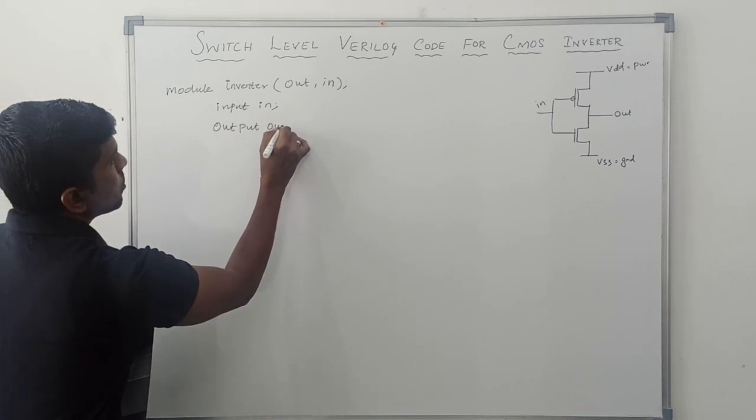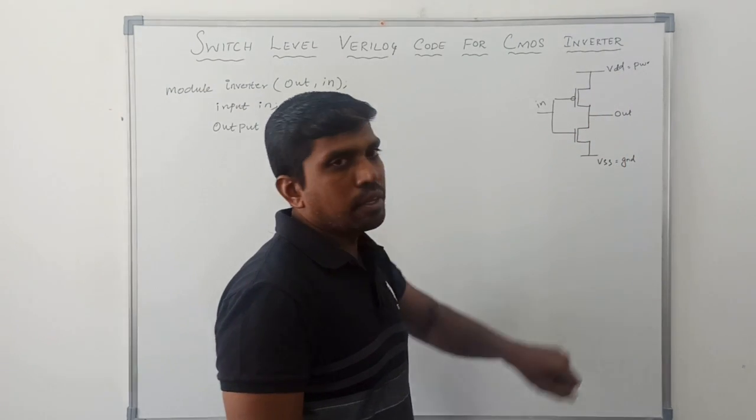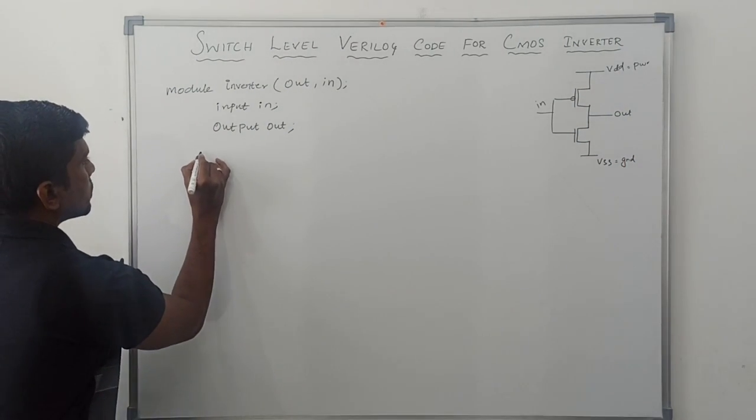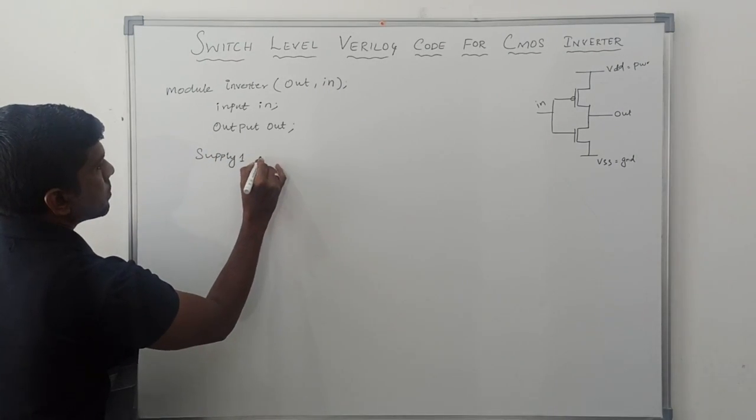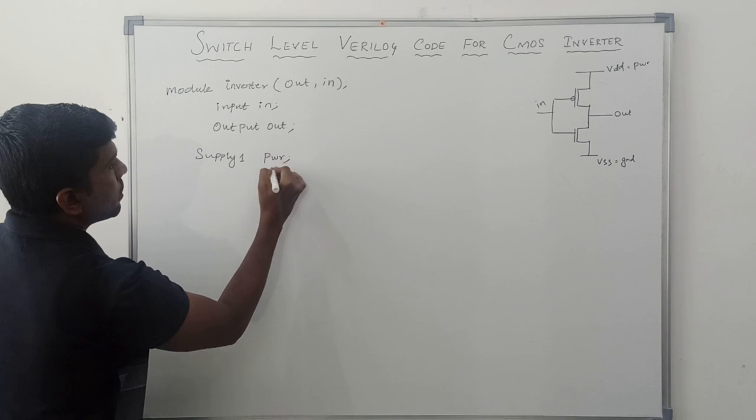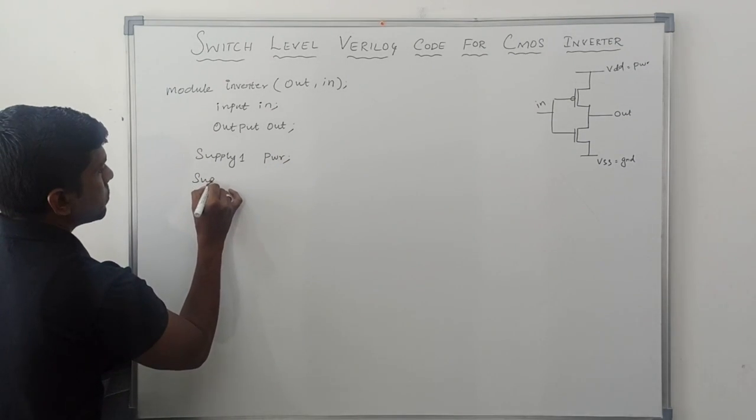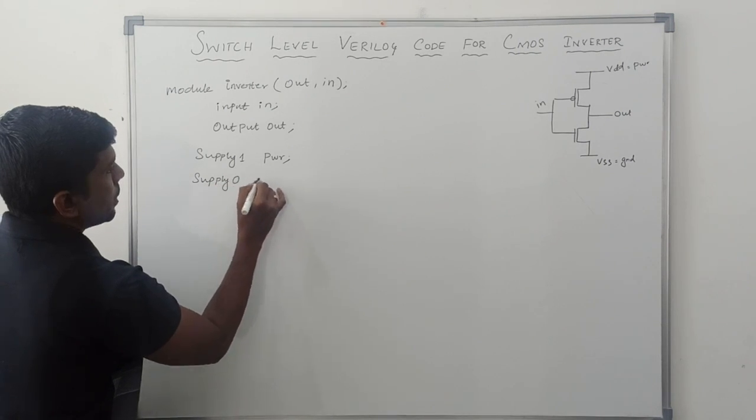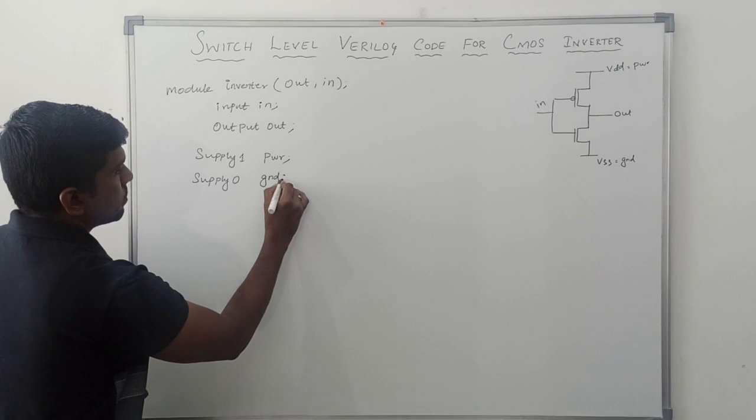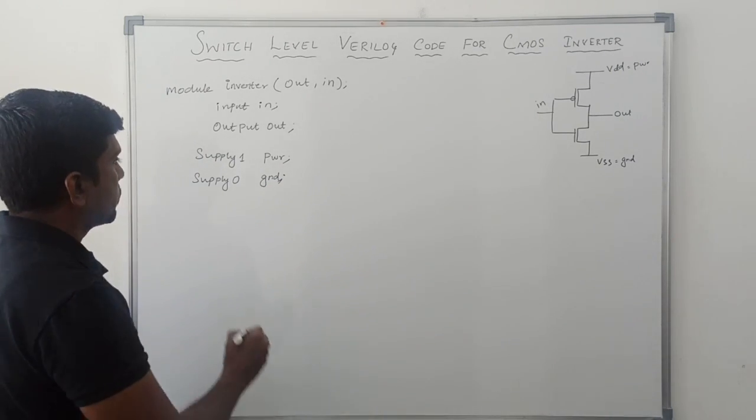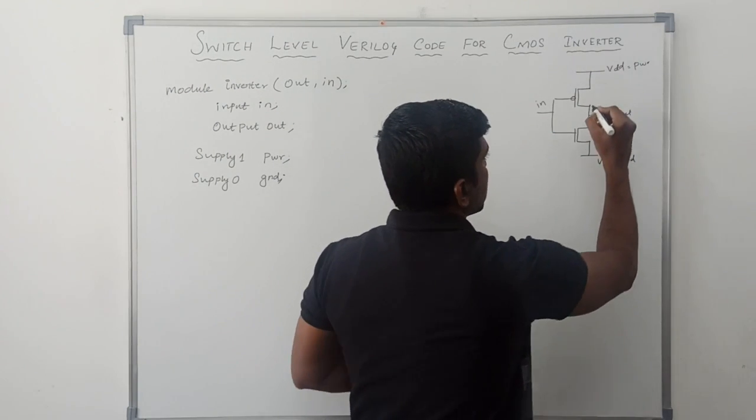Then declare supply 1 and supply 0. Supply 1 refers to power PWR, and supply 0 refers to ground GND. Then here we are using two transistors: PMOS transistor and NMOS transistor. So declare the instantiation.